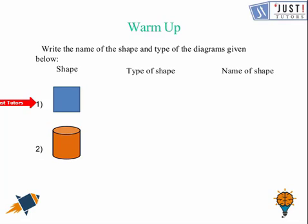Here we need to find the type of shape and the name of the shape. So this shape is 2D and the name for this shape is square. And for the other one, this shape is 3D and the name of this shape is cylinder. So if you got these two as the answer, that is really wonderful. They are the correct answer.